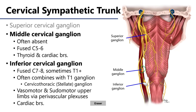Moving inferiorly, we have the inferior cervical ganglion, which represents the fusion of C7 and C8 levels. Sometimes the inferior cervical ganglion can also include the T1 ganglion, which is quite constant. When this happens, the ganglion is quite large, and we refer to it as the cervicothoracic or stellate ganglion — named because it represents a star shape.